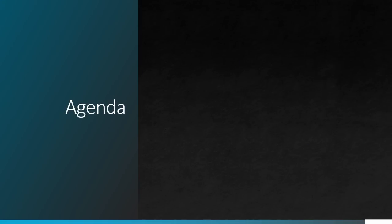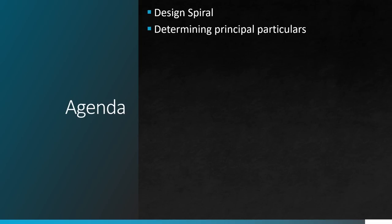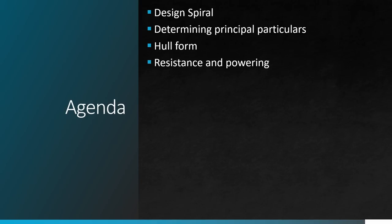On the agenda today: first, a little bit about the design spiral, a key idea in naval architecture. We're also going to talk about principal particulars, the hull form, resistance and powering, and then you'll notice it will kind of fall off the cliff in terms of what we have, because there's a ton of unknowns.